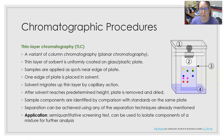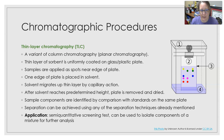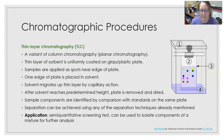Now let's look at chromatographic procedures. First, thin layer chromatography is a variant of column chromatography that is more planar — two-dimensional. A thin layer of sorbent is uniformly coated on a glass or plastic plate. Samples are applied as spots near the edge, one edge is placed in the solvent, and the solvent migrates up by capillary action. After reaching a predetermined height, the plate is removed, dried, and sample components are identified by comparison with standards on the same plate.